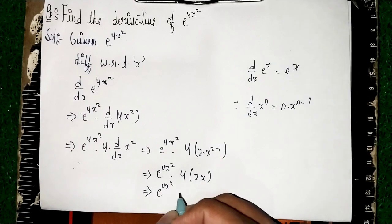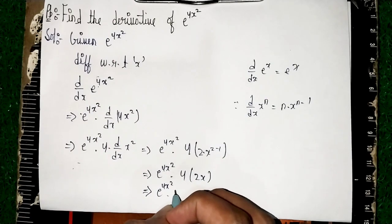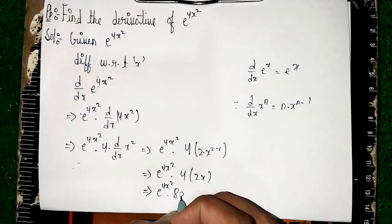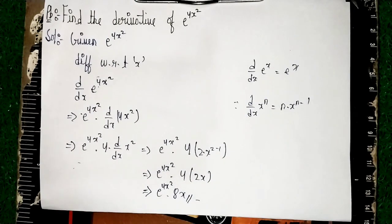So the final answer is e power 4x squared into 8x. This is our solution. Thanks for watching.